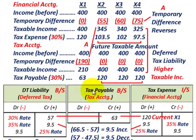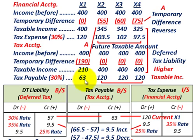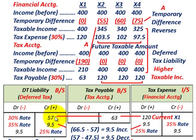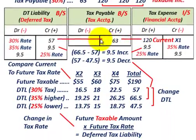Now let's look at how we'd record this and how it affects our deferred tax liability. We have our tax payable account on the balance sheet as a liability, and our tax expense on the income statement. For the current year, we credit or increase tax payable by $63,000, and we debit tax expense for $120,000 — that's our book accounting. The deferred tax liability can really be seen as a plug or balancing amount between the $63,000 credit and the $120,000 debit.